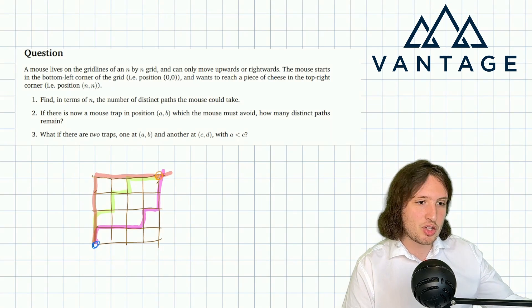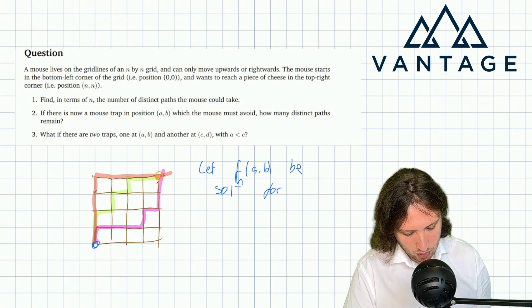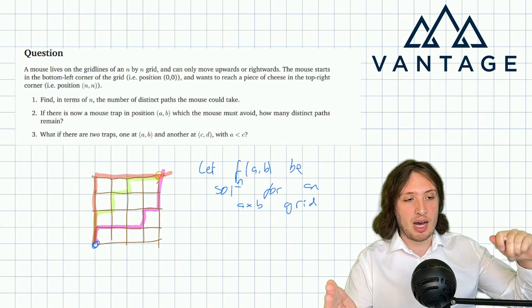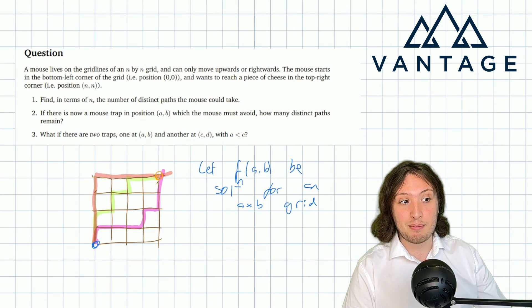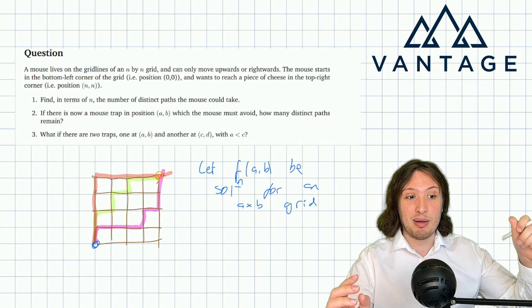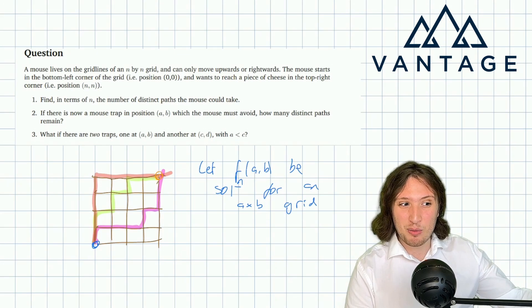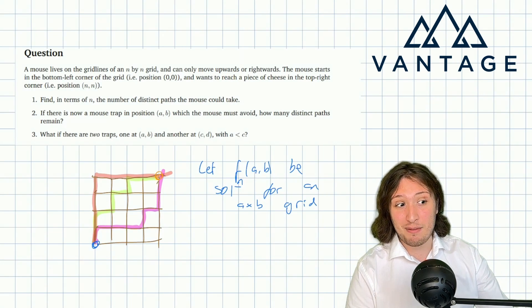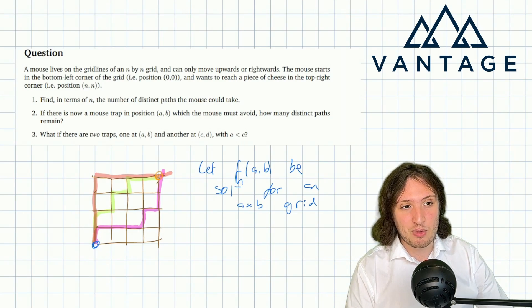We could try to set up a recursion: let f(a,b) be the solution for an a by b rectangular grid, and by considering whether you go up or right on the next move, relate it to f(a−1,b) and f(a,b−1). But solving that recursion wouldn't be easy — we want a formula for general n, not just specific values. Recursions are great if you have a computer to hand, but since we're using pen and paper, we should avoid that approach.